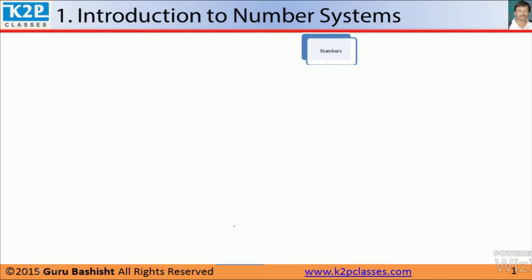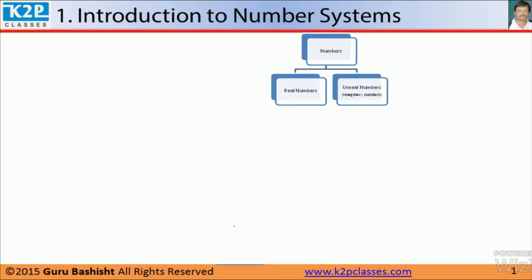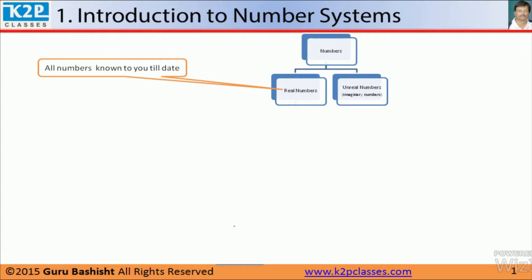So let us see what is the number system. Whatever we know till date, till class 9, you know all the numbers. The number can be grouped into two parts: real numbers and unreal numbers. Unreal numbers are also called imaginary numbers. Till date, whatever we have learned is real numbers. In class 11, we will learn about imaginary numbers, so we don't have to worry about that. All numbers known to you till date are real numbers.